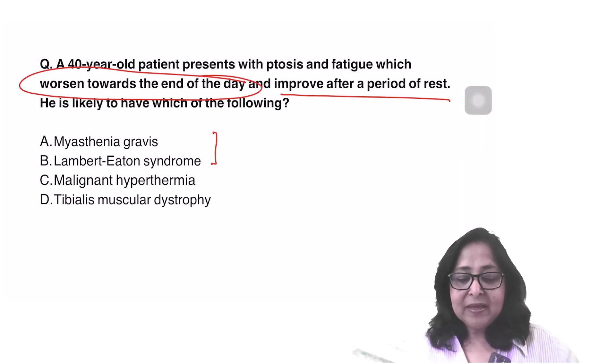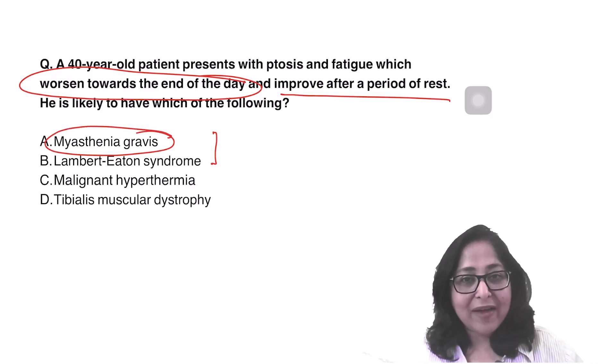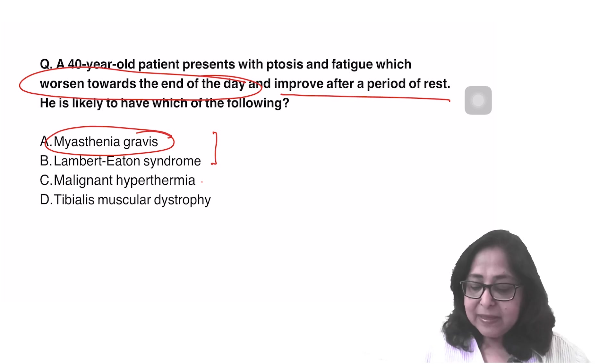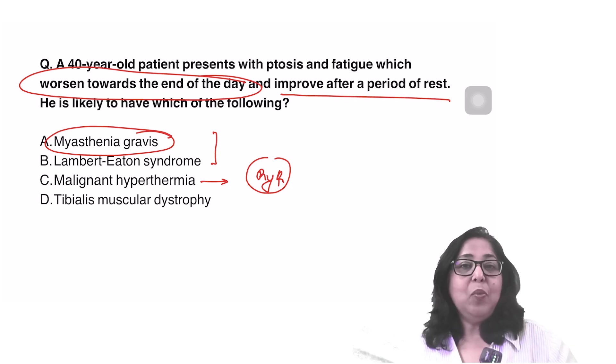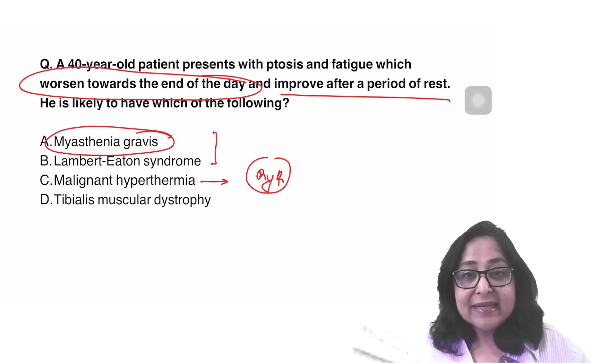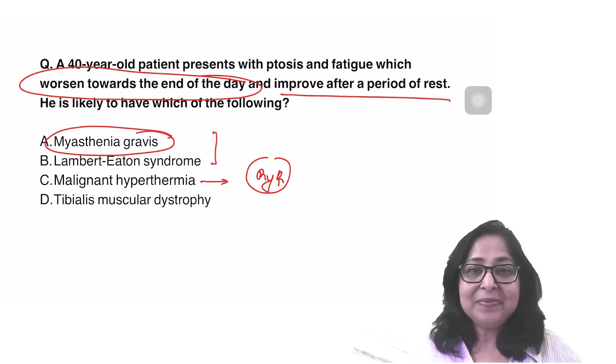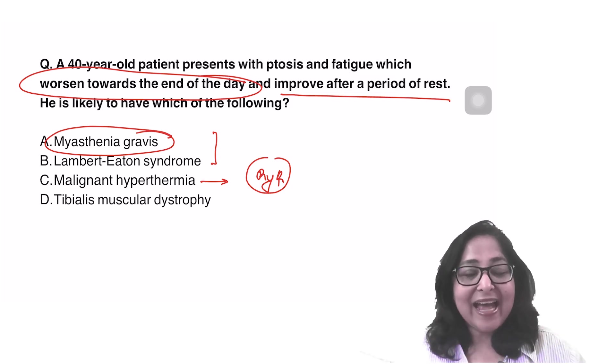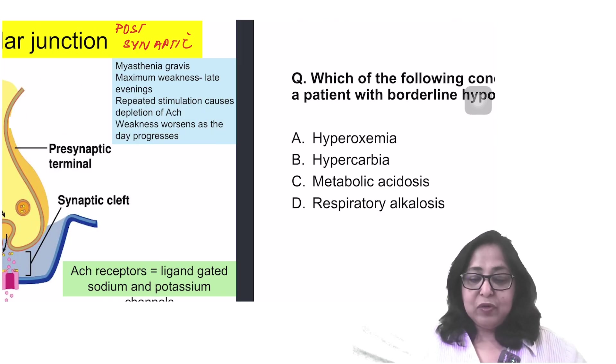So going back to my question, worsens towards the end of the day, improves after a period of rest is myasthenia gravis. What happens in malignant hyperthermia? There is a mutation of the ryanodine receptors which are present on the sarcoplasmic reticulum. When this patient is exposed to inhalational anesthetics or to succinylcholine, there is an uncontrolled release of calcium. There is muscle contraction and his temperature shoots up. This patient usually presents as an anesthetic emergency. In tibialis muscular dystrophy, there is a mutation of the contractile protein, titin.